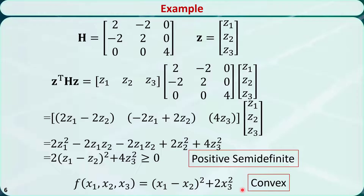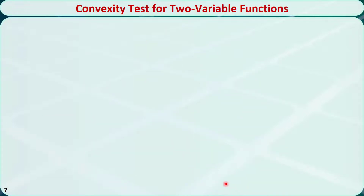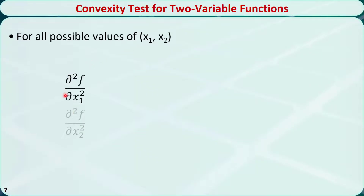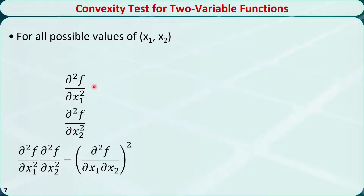The method I just introduced can be used to determine whether a function is convex or concave, and it is applicable to functions with any number of variables. For a function with only two variables, there is an easier way to tell whether it is convex or concave. We need to calculate the second-order partial derivative with respect to x1 only, the second-order partial derivative with respect to x2 only, and their product minus the second-order partial derivative with respect to x1 and x2, squared.